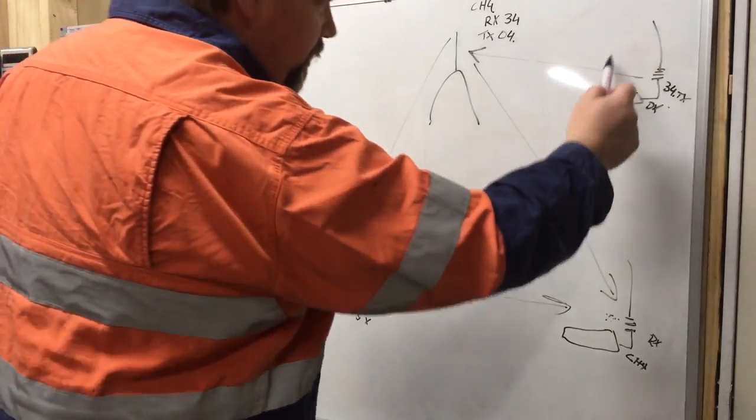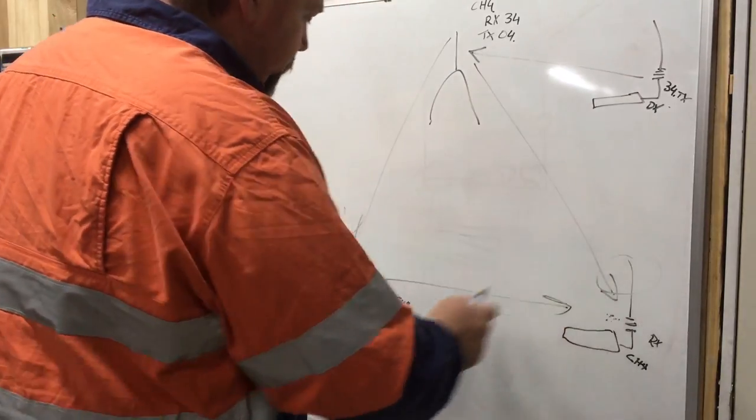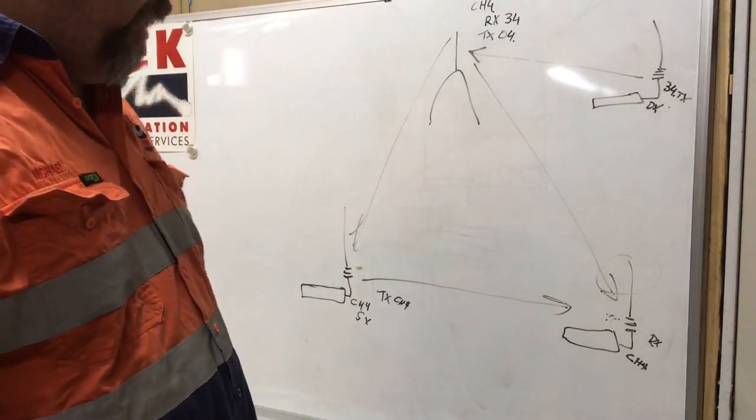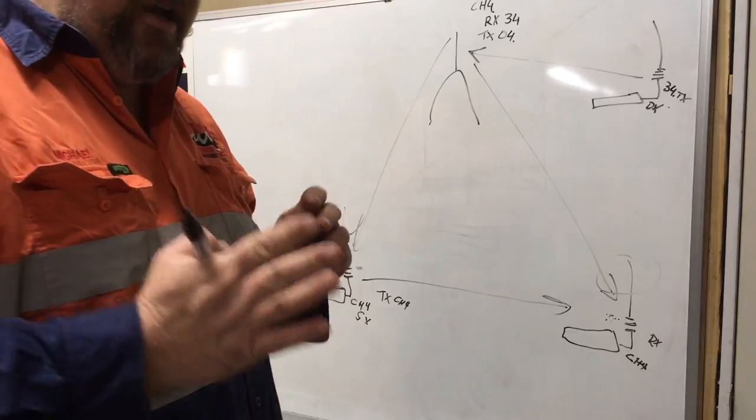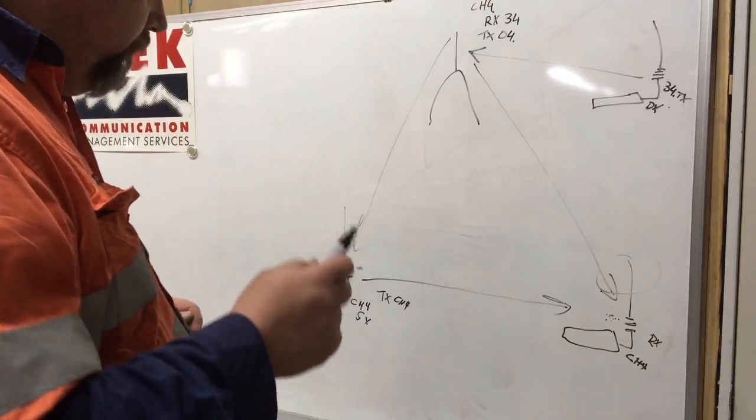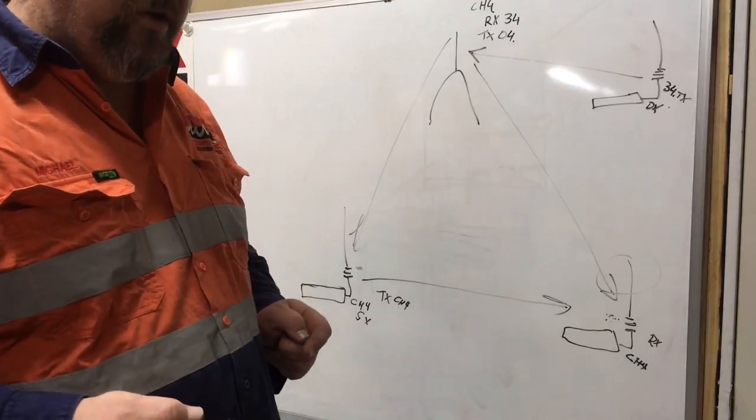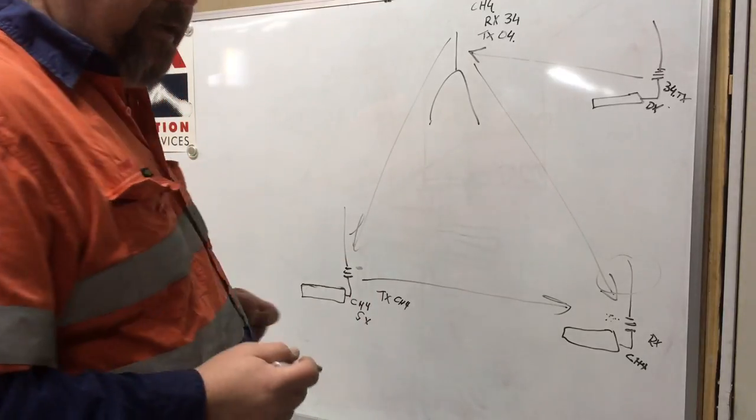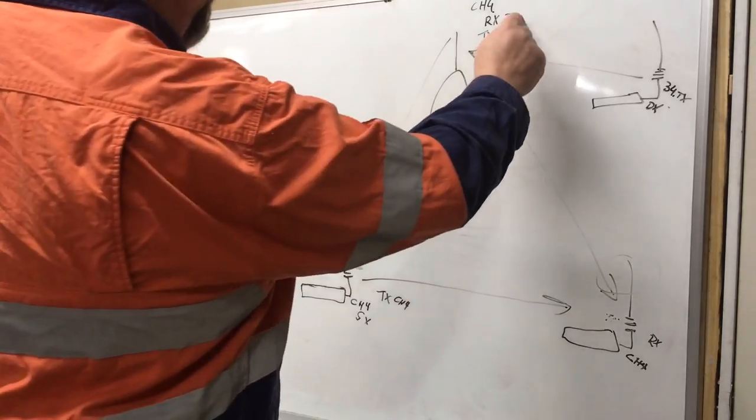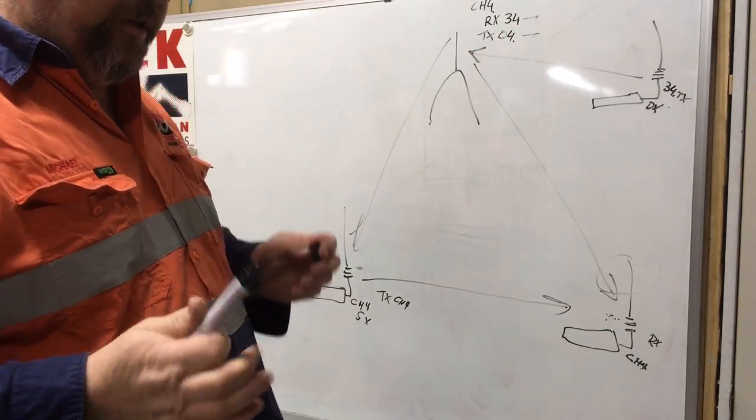And in that case, this person here might accidentally start transmitting, and cause interference, on this radio, that's trying to hear this one. So this is what happens when you have, a person incorrectly, using the frequency, that is assigned as a repeater. To overcome this situation, you must make sure that, there's no repeaters in your location, if you're using that repeater channel, and both channels 34 and 4, is where the repeater is going to be located at, so you need to stay clear of those channels.